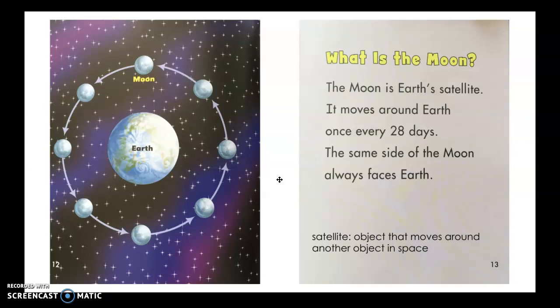Now the diagram on the left shows how the moon rotates or moves around the earth. Now it looks like there's many moons, but it's just showing how it's moving around. So there's really only one moon, but it's moving around the earth.